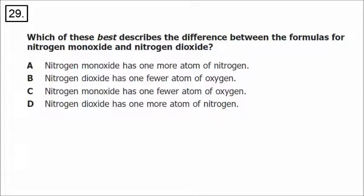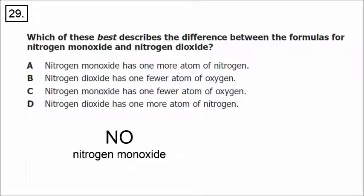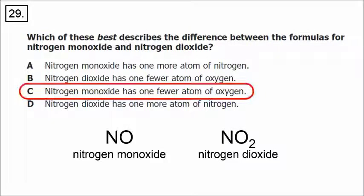In number 29, nitrogen monoxide is being compared with nitrogen dioxide. The formula of nitrogen monoxide is NO, and the formula of nitrogen dioxide is NO2. The difference is that nitrogen monoxide has one fewer atom of oxygen.